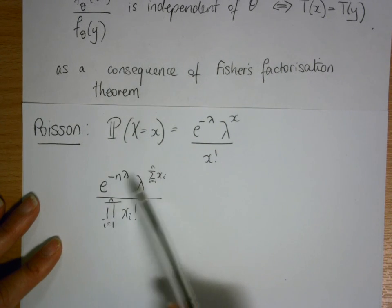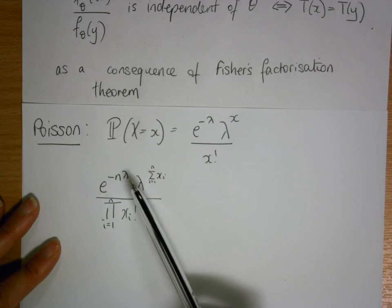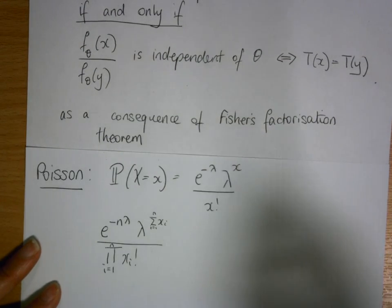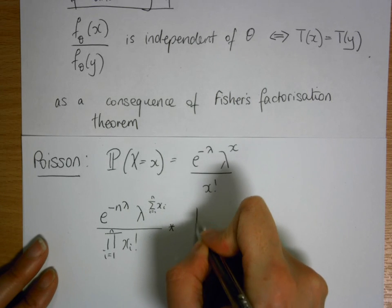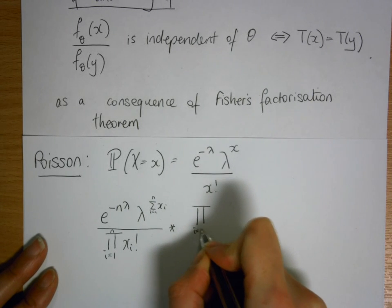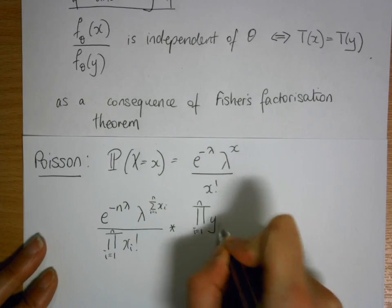If we were looking at this in terms of the ratio between our x's and y's, we can do this in a single step. We'd multiply this by the product of i equals 1 to n of yi factorial.